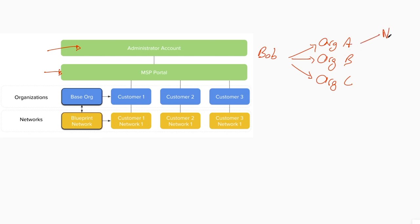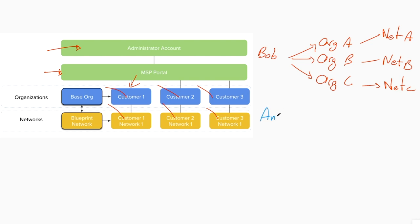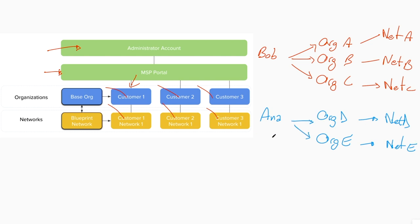Let's put it that organization A has network A, organization B has network B, and organization C has network C. The same thing applies here — once you go into the MSP portal, you have different organizations you can access, and each one can have different networks. Now let's check with Anna. Anna has organization D and organization E — let's say network B and network E. So Anna has access to these two organizations.